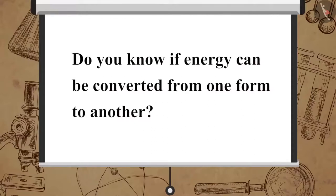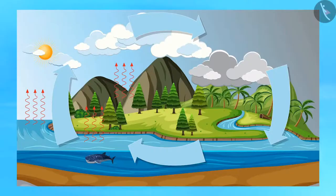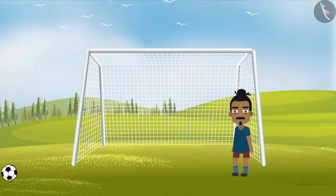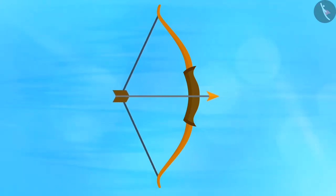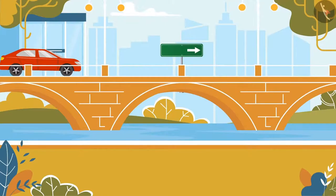Now do you know if energy can be converted from one form to another? There are various examples of energy conversion in nature, like the water cycle or the process of photosynthesis. In the bow and arrow example, potential energy is stored when the bow string is stretched and used as kinetic energy to throw off the arrow. Another example would be a running car where chemical energy of the fuel is converted into mechanical energy, which aids the car to move.